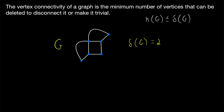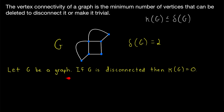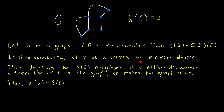Now let's go through the logic more formally. We're proving that κ(G) ≤ δ(G). Let G be a graph. If G is disconnected, then by definition its vertex connectivity is zero, and zero is certainly less than or equal to its minimum degree, since the smallest the minimum degree can possibly be is zero. So going forward, we can assume G is connected. If G is connected, let v be a vertex of minimum degree. Then, by deleting the δ(G) neighbors of v, we will either disconnect v from the rest of the graph or make the graph trivial — which would happen if there were no vertices left except v. Either way, deleting δ(G) vertices is sufficient to disconnect or make the graph trivial, and so by definition, κ(G) ≤ δ(G).